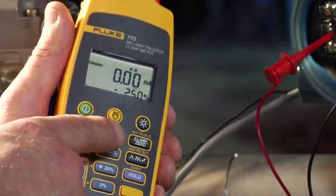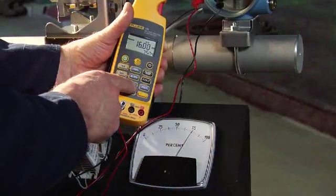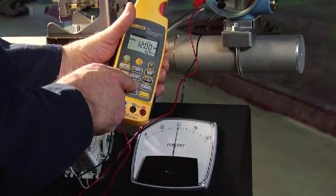Select milliamp simulate, then dial up the output and test the loop. The transmitter is in series with the milliamp signal as shown by the local indicator.